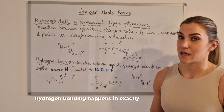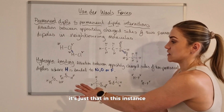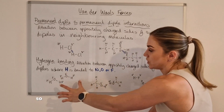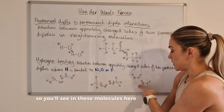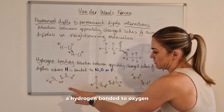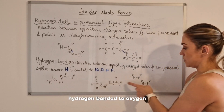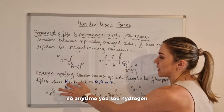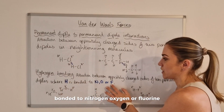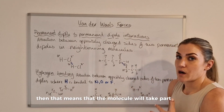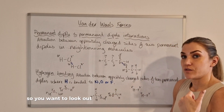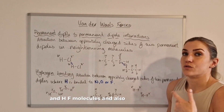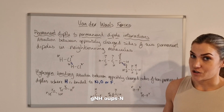Hydrogen bonding happens in exactly the same way. It's just that in this instance, hydrogen is bonded to nitrogen, oxygen, or fluorine within the molecule. You'll see in these molecules here: hydrogen bonded to oxygen, hydrogen bonded to oxygen, hydrogen bonded to fluorine — and you could also have hydrogen bonded to nitrogen. Any time you see hydrogen bonded to nitrogen, oxygen, or fluorine, that molecule will take part in hydrogen bonding. Look out for hydroxyl groups (OH groups), HF molecules, and amine groups (NH groups).